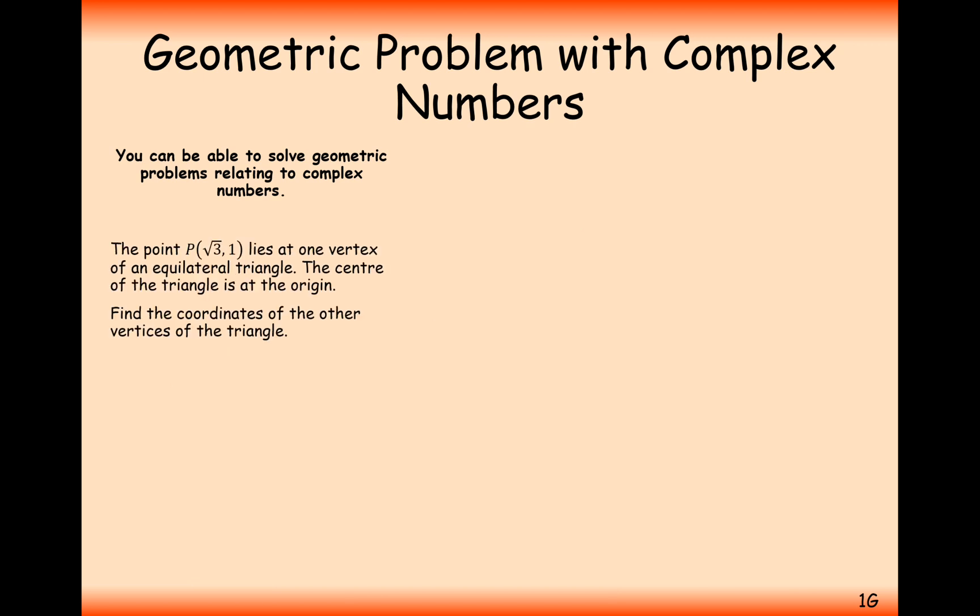So let's see a question in action then. The point (√3, 1) lies on one vertex of an equilateral triangle. The centre of the triangle is at the origin. Find the coordinates of the other vertices of the triangle. So what we've effectively got is we've got √3, 1 on the Argan diagram.